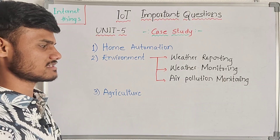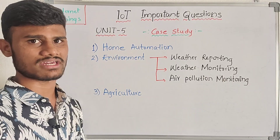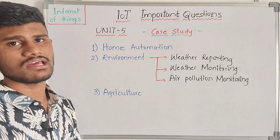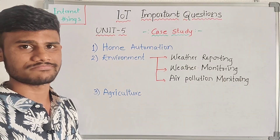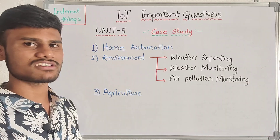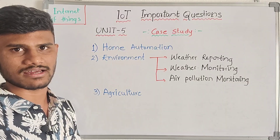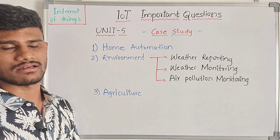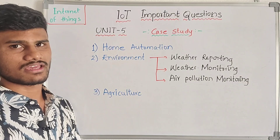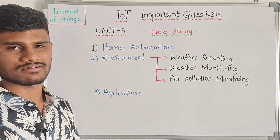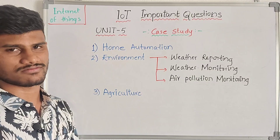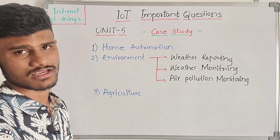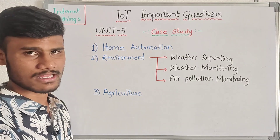Next is agriculture. We need to use smart irrigation questions. Smart irrigation — there are fire sensors and water sensors. Water sensors are major in irrigation.